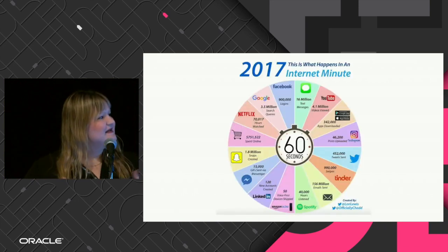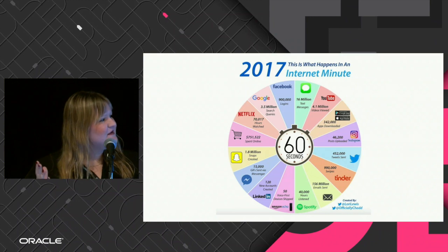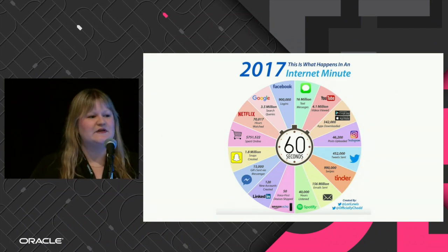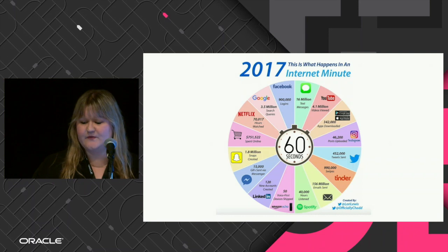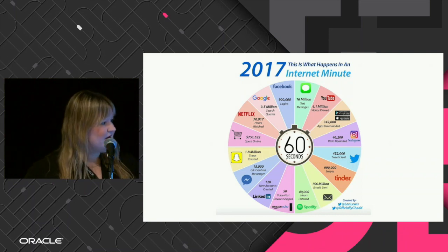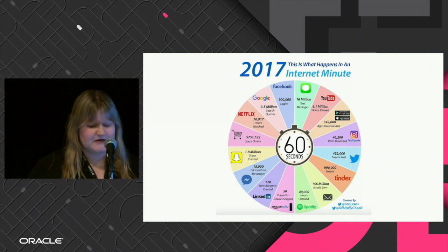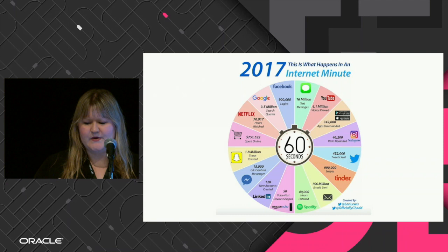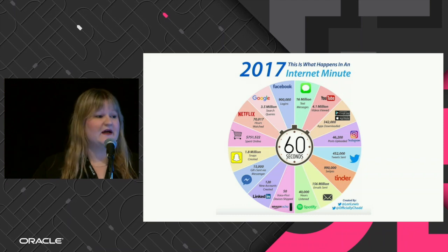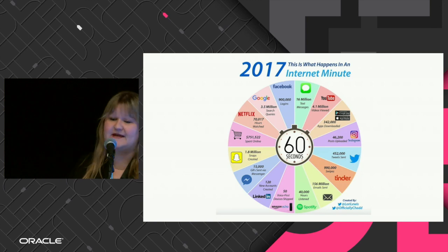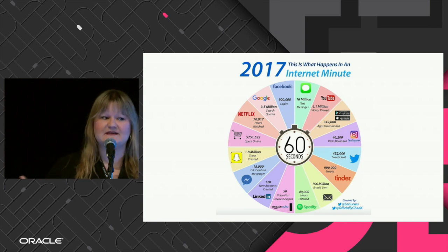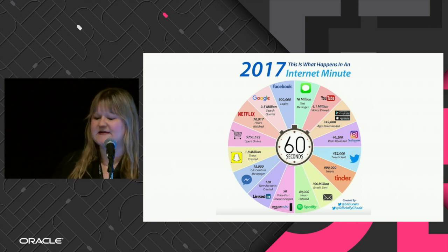We're going to use Spring Reactive, which is the latest version — version 5. This is a nice infographic I like to use especially when we have to justify why we're using reactive programming, especially on the back-end — not only reactive programming but also reactive design.